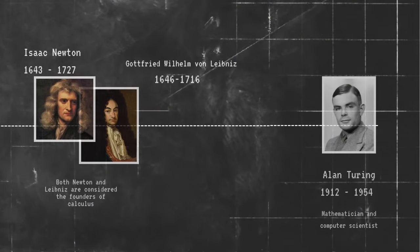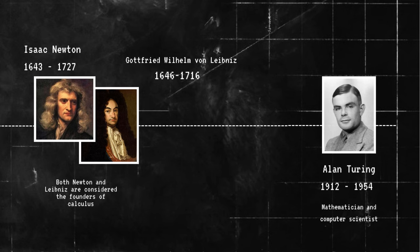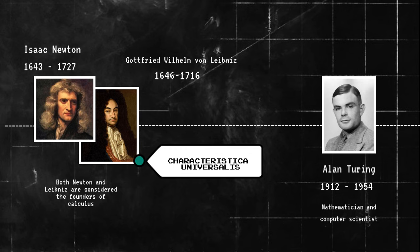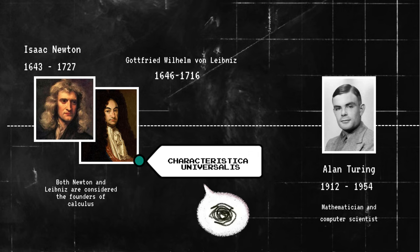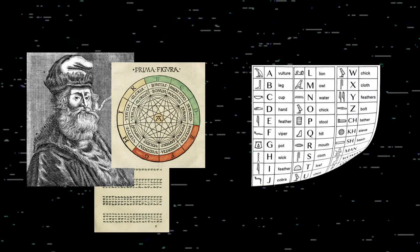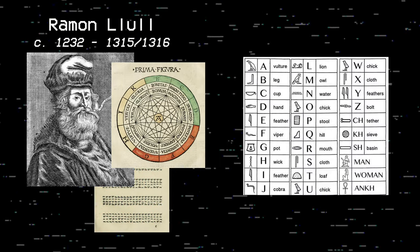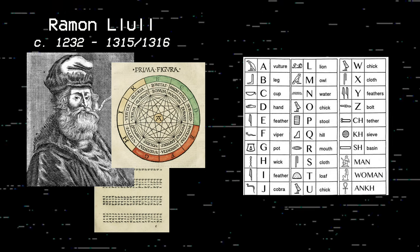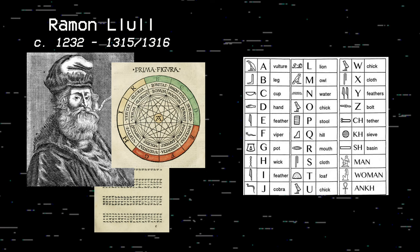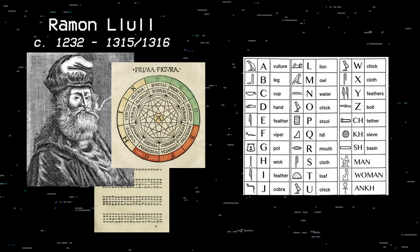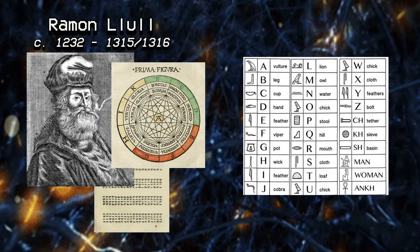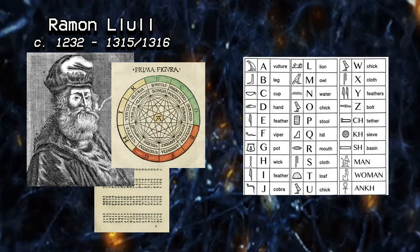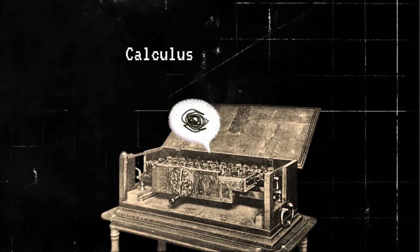Turing's work was part of a lineage tracing back to Gottfried Leibniz, the polymath who independently developed calculus alongside Newton. Among Leibniz's numerous contributions to modern thought was his concept of a universal characteristic, a hypothetical language capable of expressing all mathematical and scientific knowledge. Drawing inspiration partly from the 13th century philosopher Ramon Lull, Leibniz envisioned this language as ideographic, similar to Egyptian hieroglyphs, but with symbols representing fundamental concepts in math and science. He believed this language would provide humanity with a tool to amplify human reasoning far beyond optical instruments such as microscopes and telescopes. Leibniz also conceived of a machine to process this language, which he termed the calculus ratiocinator.